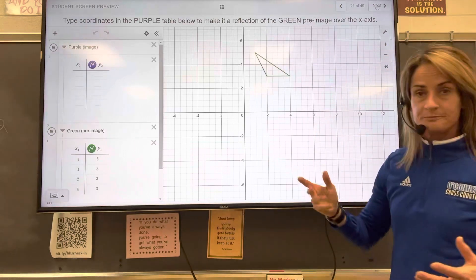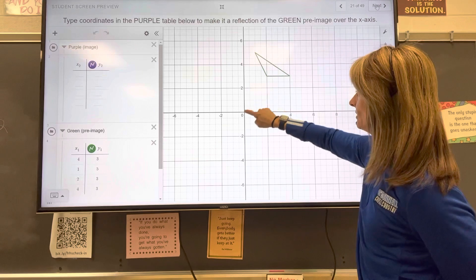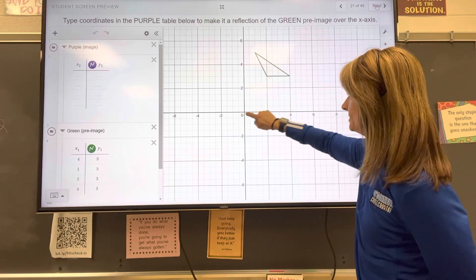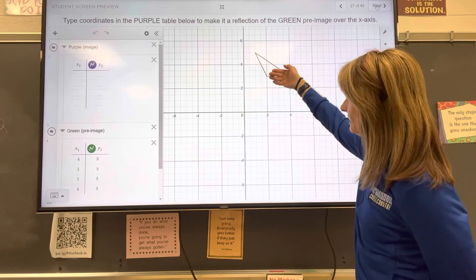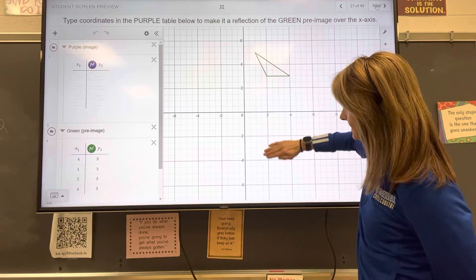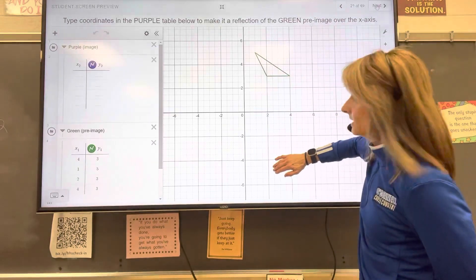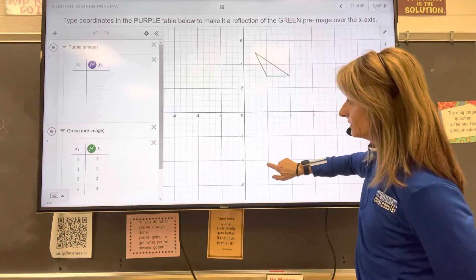So what's going to happen? The x-coordinates, for example, this point right here, this ordered pair would be 2, 3. If I reflect this point over the x-axis, the x-coordinate is going to stay the same and the y-coordinate is now going to be the opposite sign. So this point would be at 2, negative 3.